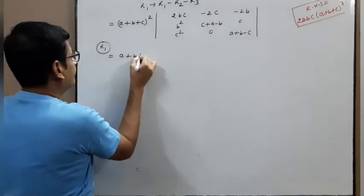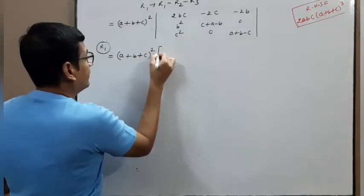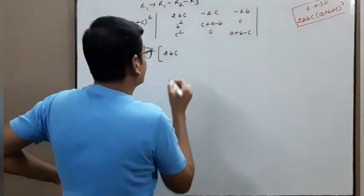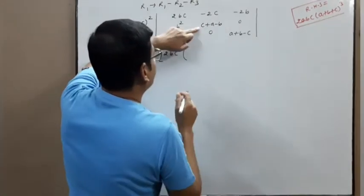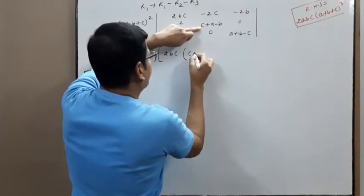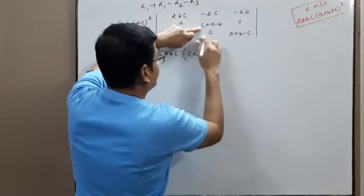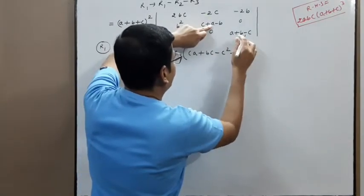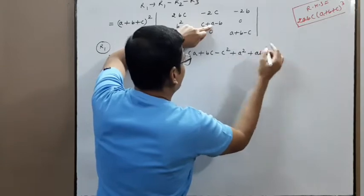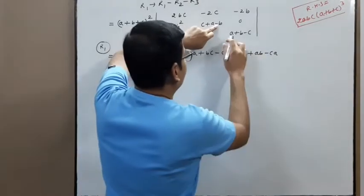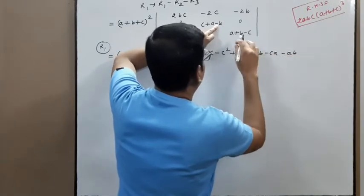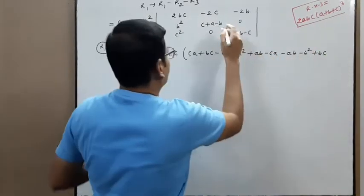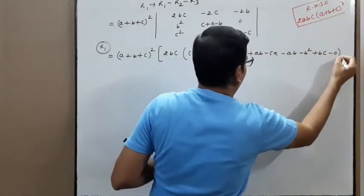We get (a+b+c)² in bracket times 2bc. Expanding along R1: 2bc times this minor. Multiply: c·ac, c·b = bc, c·(−c) = −c². Then a·a = a², a·b = ab, a·(−c) = −ac. Then −b·a = −ab, giving −b² and +bc. So this into this, and minus this into this, bracket close.